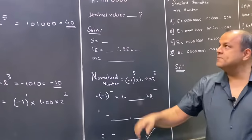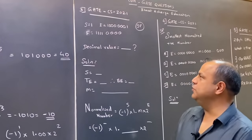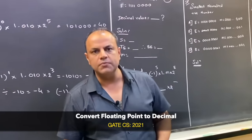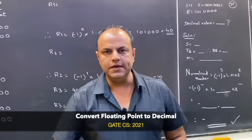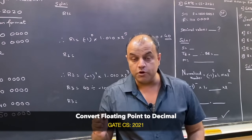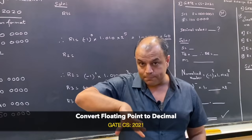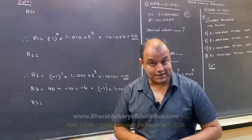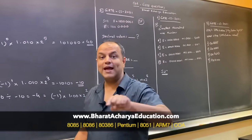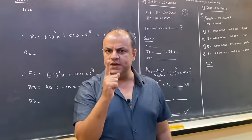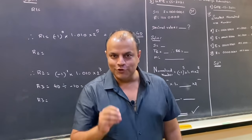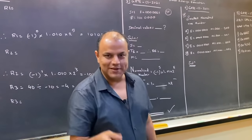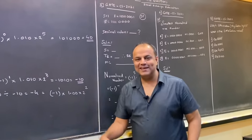The next question is pretty interesting — they have given you sign, exponent, and fraction (the mantissa part) and asked you to figure out what the number is. This is exactly the opposite of what we do normally. Normally we take a decimal number and convert it into a specified floating point format; here it's the reverse — they've given you the floating point parts and you've got to figure out the decimal number, including the correct sign. There are no options given, so you've got to calculate the answer to pinpoint accuracy, since these are computer-corrected exams.